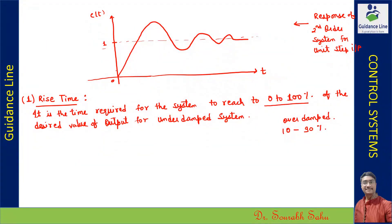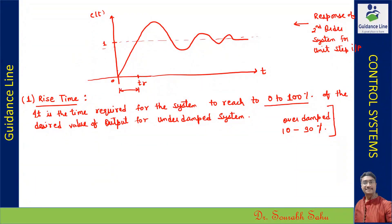When the response moves from ten percent and reaches to ninety percent, we consider that as rise time. You have to be aware that for an under-damped system, the rise time is when the system response moves from zero to a hundred percent. The first time it moves from zero to a hundred percent, this is called the rise time.